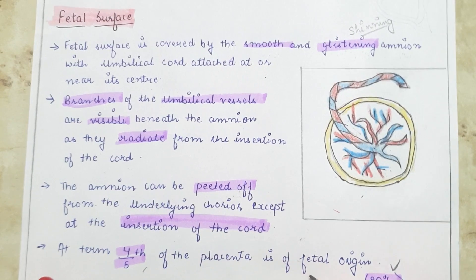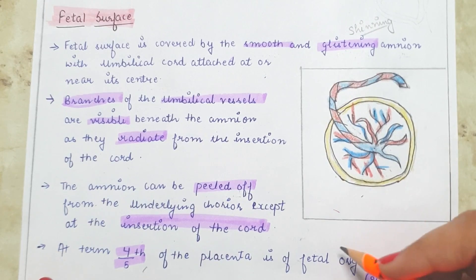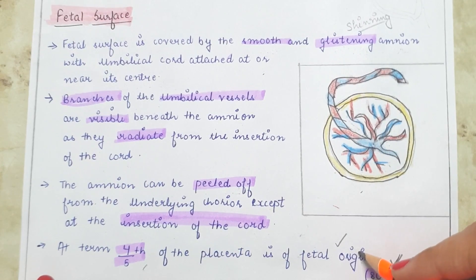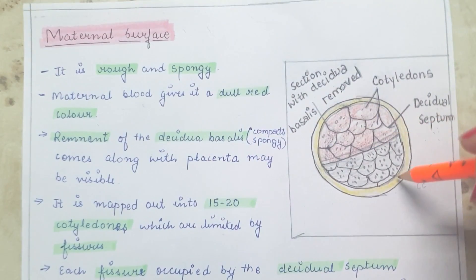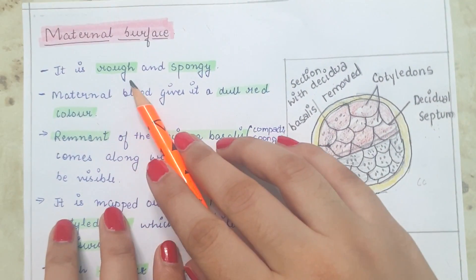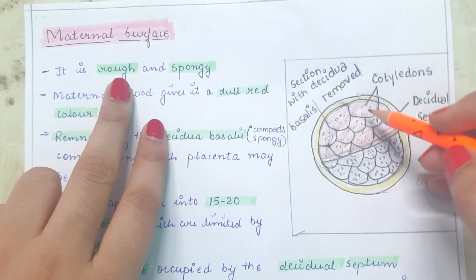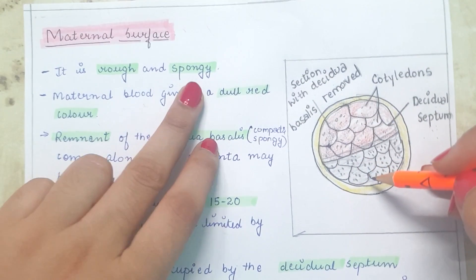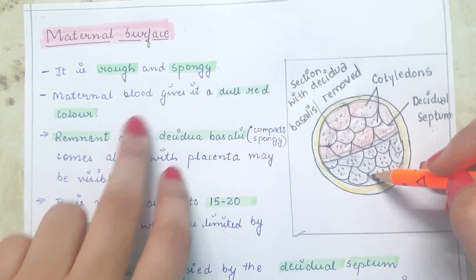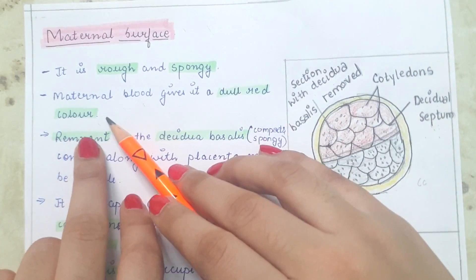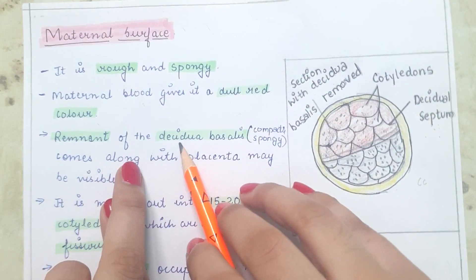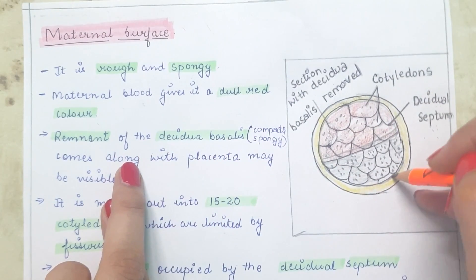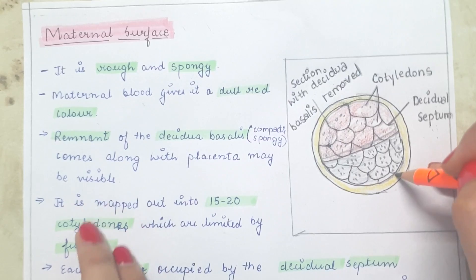At term, four-fifths — 80% — of the placenta is of fetal origin. The maternal surface is rough and spongy, with an irregular area but soft feel, and is dull red in color due to maternal blood. During delivery, some remnants of the decidua basalis are delivered along with the placenta, which are visible on examination.